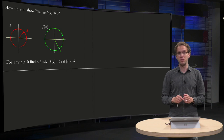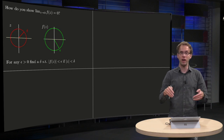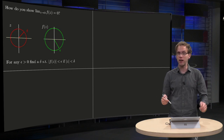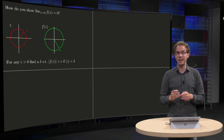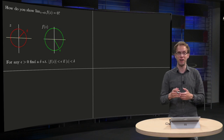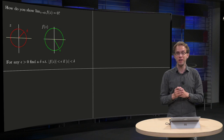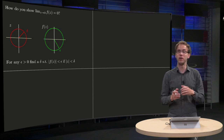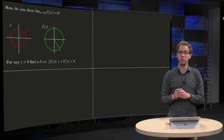Can we now conclude the limit equals zero? Still not, because we could go along a parabola or any curve. The problem is you cannot try every curve because there are infinitely many options. In order to really prove that the limit equals zero, you need to use an epsilon-delta argument.